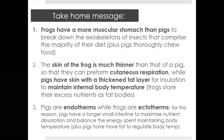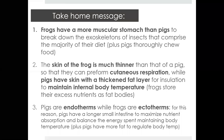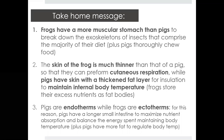Pigs have skin thickened with a fat layer for insulation to help maintain internal body temperature. Remember that pigs are endotherms while frogs are ectotherms. For this reason, pigs have a long small intestine to maximize the amount of nutrients they can absorb through digestion, balancing the energy spent on maintaining body temperature. Being an endotherm is a lot more energetically expensive, so you need to be efficient in digestion and pull as many nutrients as possible from your food, because maintaining all these body functions is high energy.